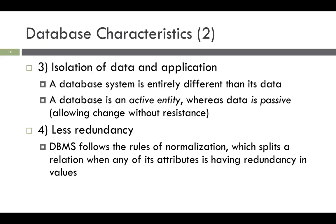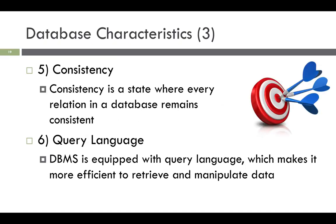A DBMS is entirely different from its data — it is isolated. A database is an active entity whereas the data is passive. A DBMS also stores metadata, which is the data about data, to ease its own processes. DBMS follows the rules of normalization, which helps to reduce redundancy. Consistency is a state where every relation in a database remains consistent, and there exist methods and techniques which can detect attempts to leave the database in an inconsistent state. DBMS can provide greater consistency compared to earlier forms of data storing applications.